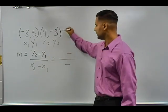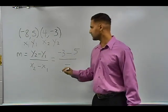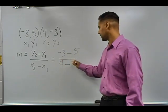So the y2 is negative 3 and the y1 is positive 5. And the x2 is positive 4 and the x1 is negative 8.